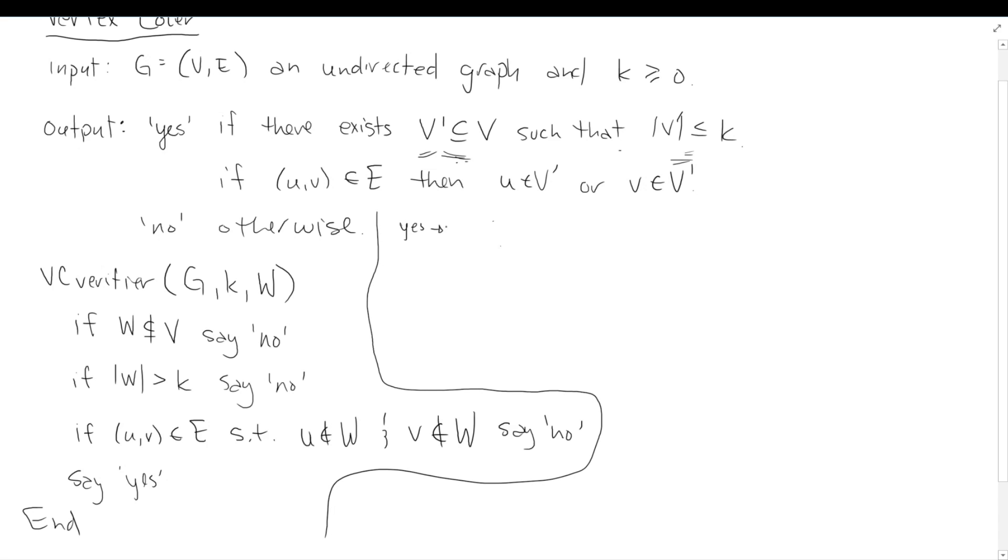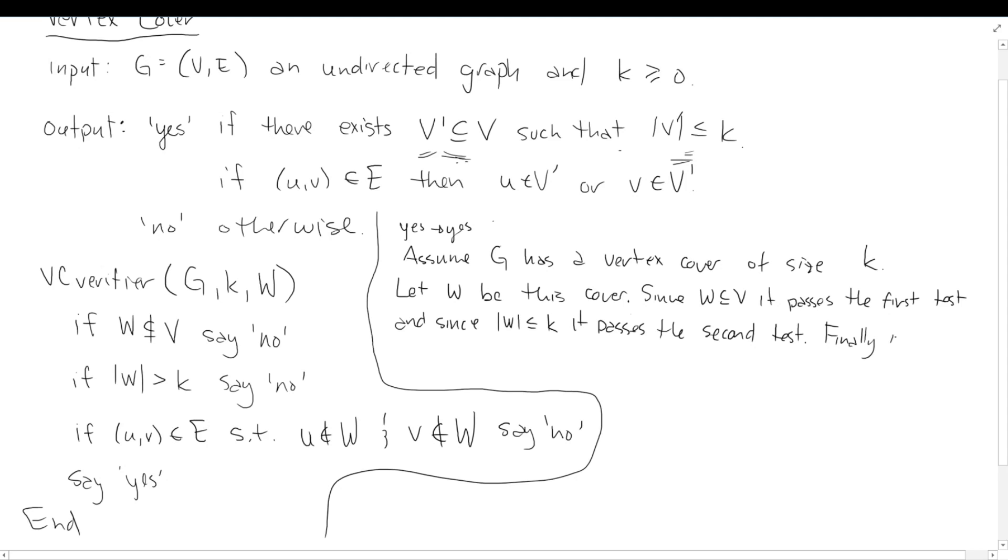And we might want to argue that this is correct in two branches, and maybe I'll make some space over here. I'll start with my yes implies yes argument. And that means I need to assume we have a yes instance. So assume G has a vertex cover of size K. Then let W be this cover. Then we want to argue that it passes the test. So since W is a subset of V, it passes the first test. And since the size of W is less than or equal to K, well specifically equal to K, we pass the second test. Finally, it covers all edges, so it passes the final test. And we say yes. And that's what we were trying to argue. So we're done.